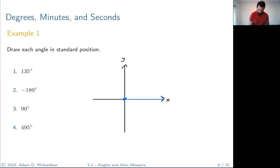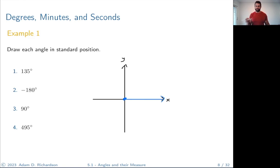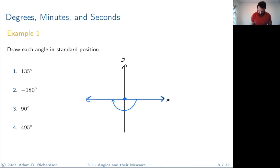Now let's try negative 180 degrees. A straight angle is 180 degrees, but since the angle is negative we measure clockwise — going down this way all the way to that line. This is 180 degrees but negative because we went in the opposite direction.